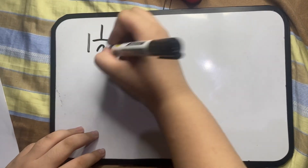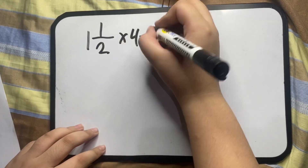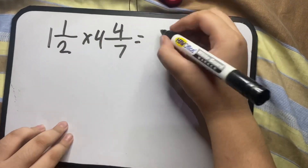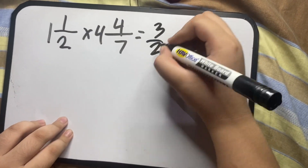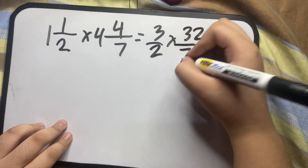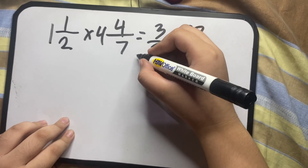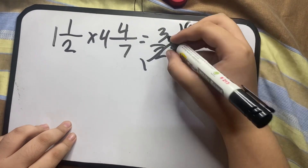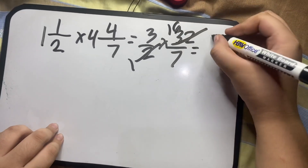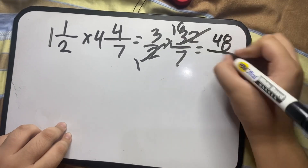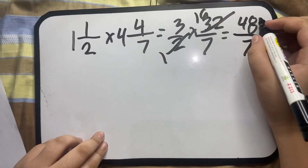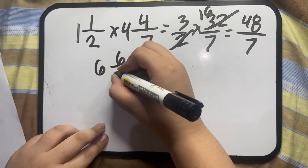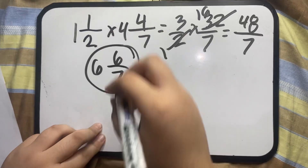Or you can use the cancellation method. 2 divided by 2 equals 1; 2 divided by 32 equals 16. Then 3 times 16 equals 48, and 1 times 7 equals 7. Simplify if possible. Here's the final answer — it's the same result.